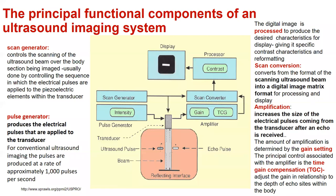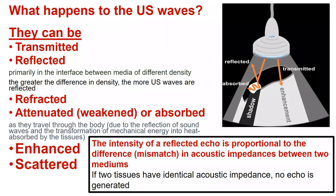The principal functional components of an ultrasound imaging system are: the pulse generator, which produces the electrical pulses applied to the transducer; then they will be amplified to increase the size of electrical pulses coming from the transducer after an echo is received; and then these scans will be converted and processed to create the characteristic image desired by the doctors.